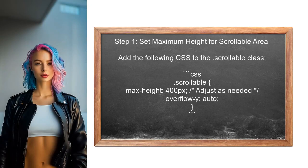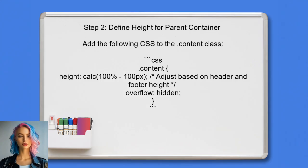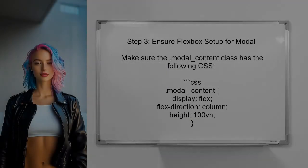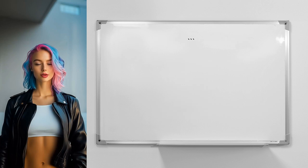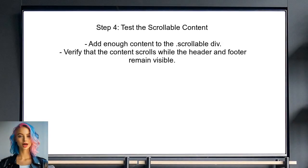To begin solving the issue with scrolling inside nested flexboxes, we need to ensure that the scrollable content is properly constrained within its parent container. First, set a maximum height for the scrollable area. Next, ensure that the parent container of the scrollable content has a defined height — this will allow the scrollable area to function correctly within the modal. Then, check that the modal itself is set up for proper flexbox behavior, meaning the modal content is displayed as a flex container. Finally, test the modal by adding enough content to the scrollable area to trigger the scroll.